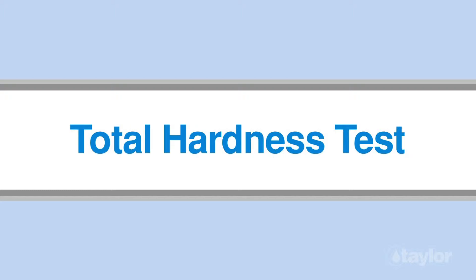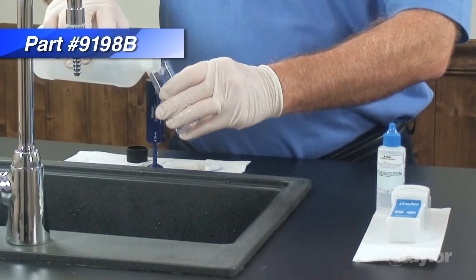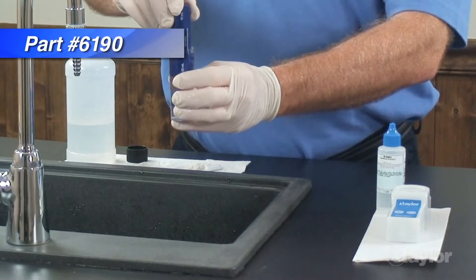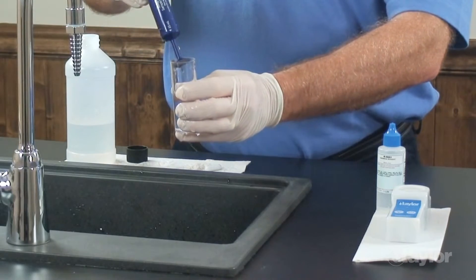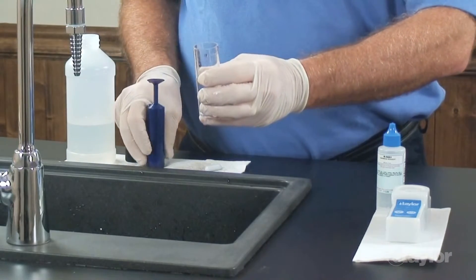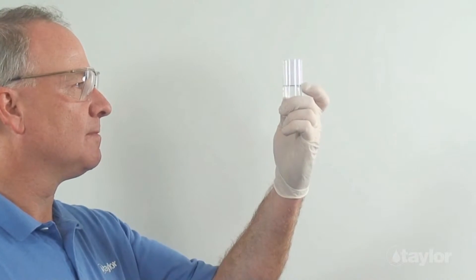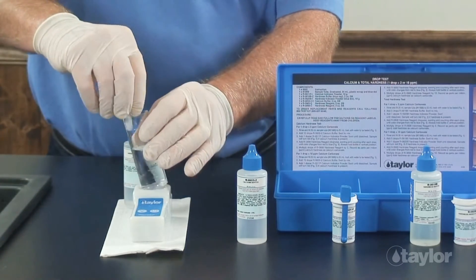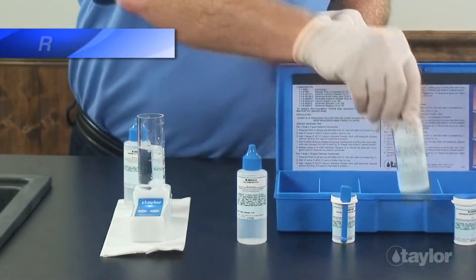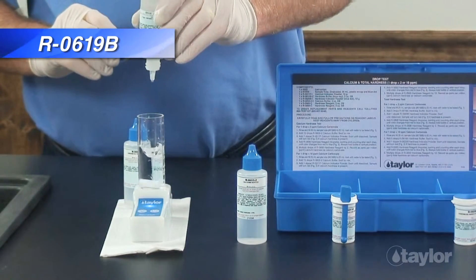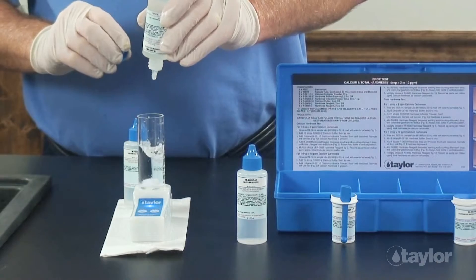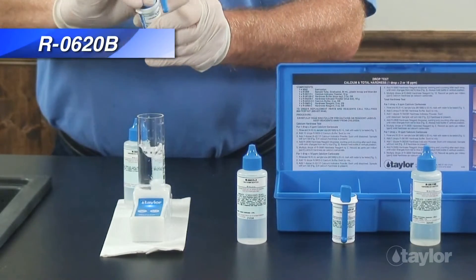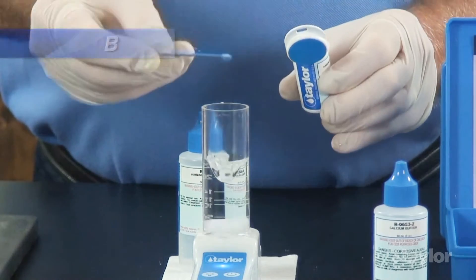Next we will perform the total hardness test. Fill the sample tube to the 25 ml mark with the water to be tested. Add five drops of hardness buffer and one level dipper of hardness indicator powder and swirl to mix. If hardness is present, the sample will turn red.